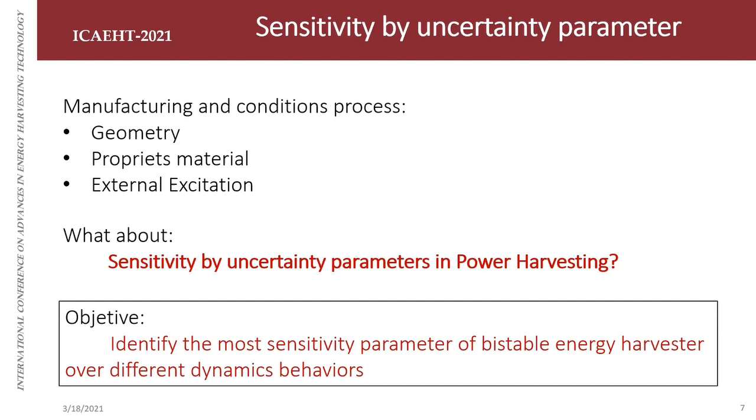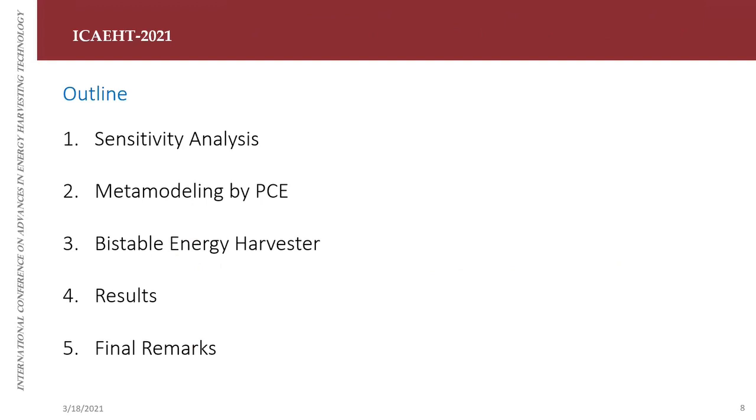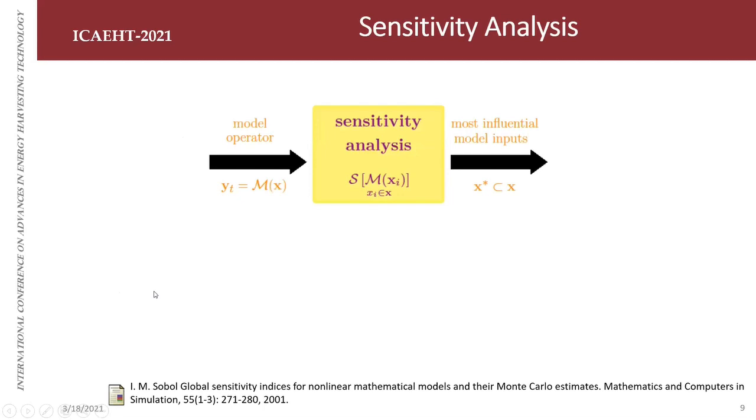My objective here is to identify and classify the most important parameters of bistable energy harvesters that cause variability in power harvesting, while analyzing different dynamic behaviors. My presentation is divided into five sections. First, an overview of sensitivity analysis. Second, I introduce some concepts about metamodeling by polynomial chaos expansion. Next, the bistable energy harvester system that I analyzed, the results, and the final remarks.